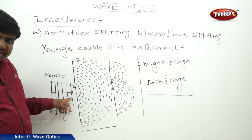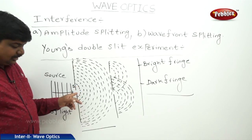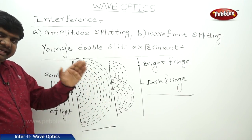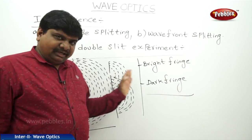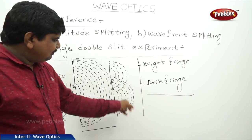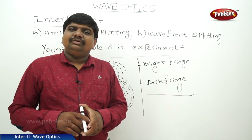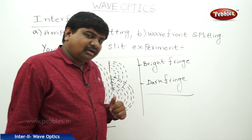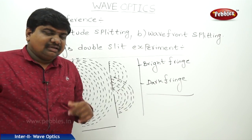This interference uses a source of light which is a monochromatic beam of a specific wavelength. This light passes through a narrow slit S, and the amplitude is split. Waves expand and pass through two narrow slits, producing wave front splitting. These two narrow slits produce constructive interference giving bright fringes, and destructive interference giving dark fringes. In this experiment, fringe width and related factors can be determined.